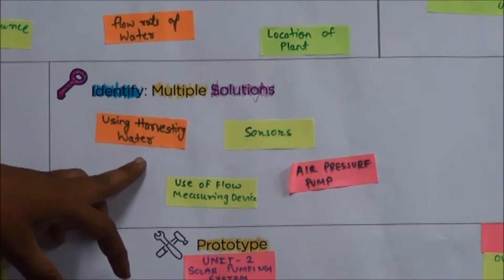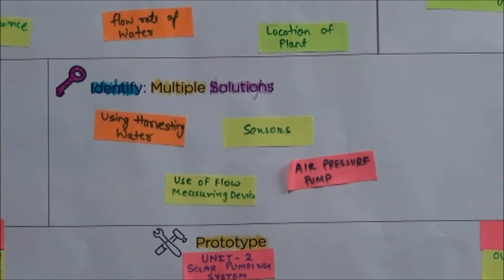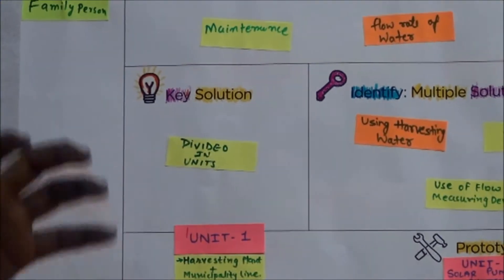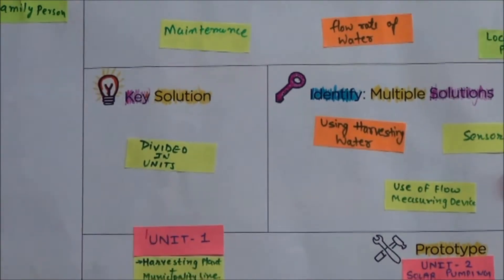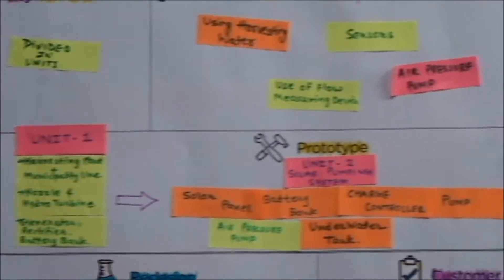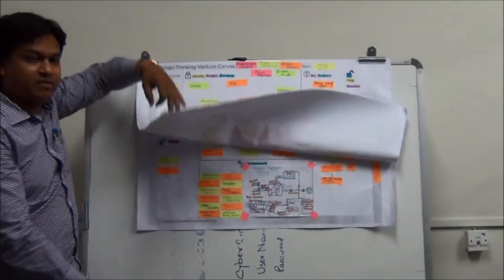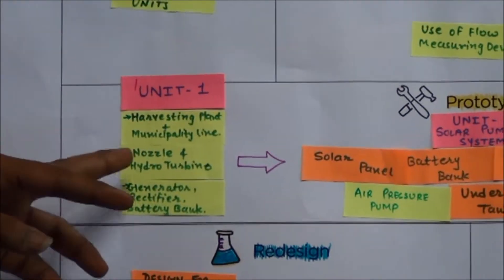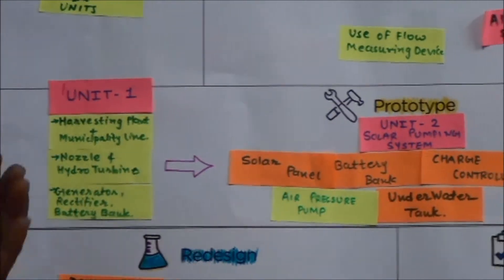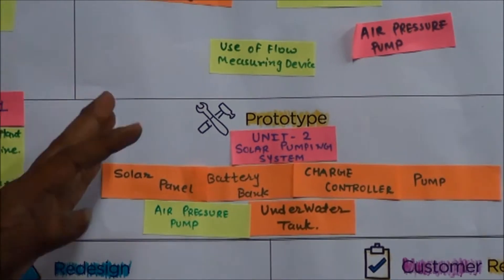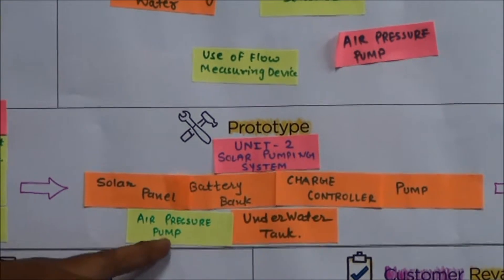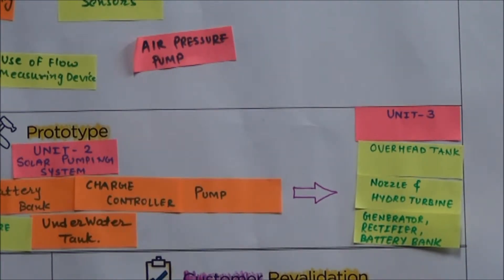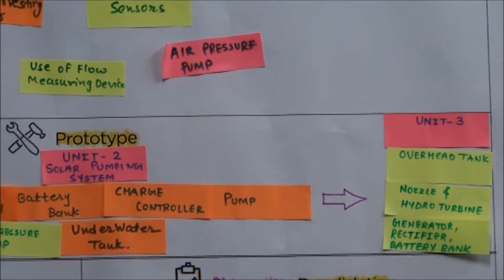From the key problem, among multiple problems, we come to many solutions: using harvesting water, sensors, use of flow measuring devices like venturimeter and orifice, and air pressure pump. These are the multiple solutions. Then we come to the key solution: divide the system into different types of units. We arrive at three units — Unit 1, Unit 2, and Unit 3. Unit 1 consists of harvesting plant plus municipal line, nozzle, hydro turbine, generator, rectifier, and battery banks. Unit 2 consists of solar panel, battery bank, charge controller, pump, air pressure, and underwater tank. Unit 3 is overhead tank, nozzle, hydro turbine, generator, rectifier, and battery bank. We redesigned it after re-revalidation.